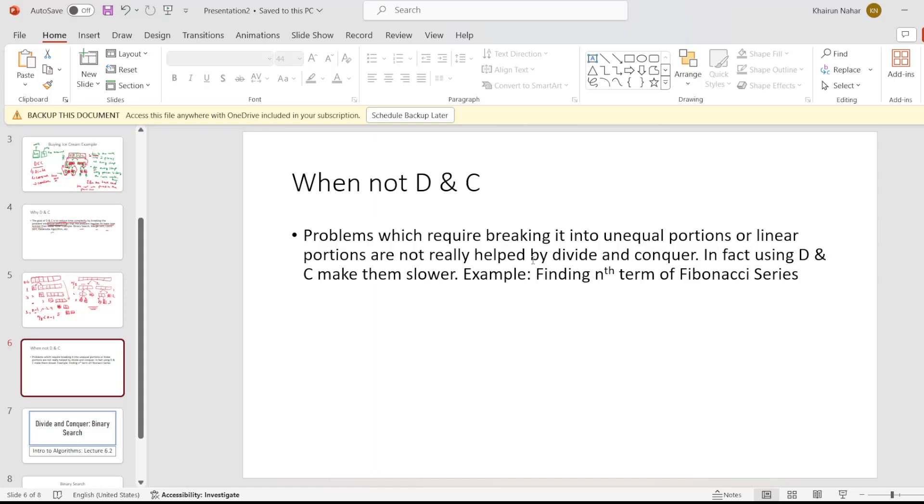So problems which require breaking it into unequal portions or linear portions are not really helped by divide and conquer. In fact, D&C makes them slower. Example: finding the nth term of Fibonacci series. I will provide the link in the description box of this video. If you solve Fibonacci series using divide and conquer, the equation was something like T(n) = T(n-1) + T(n-2) where the problem was breaking down into two portions, each of linear size, and they are unequal. One of them is n-1, the other is n-2, or linearly divided.